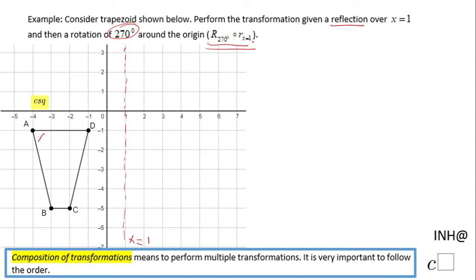Reflection over x equals 1 first, rotation second. So be careful how you read if you see things like this. And as I said here, it is very important to follow the order, because if you do not follow the order then you're gonna have an issue.